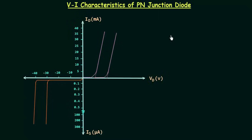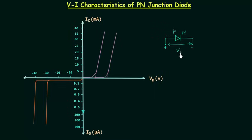In the forward bias condition, we connect the positive terminal of the battery to the P side and the negative terminal to the N side. First I will make the circuit. This is the symbol of the diode — this is the P side, this is the N side. We connect the P side to the positive potential and the N side to the negative potential. Voltage across the diode is Vd and current through the diode is Id.